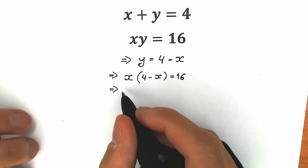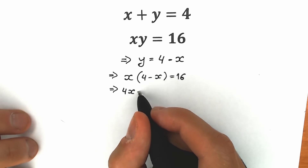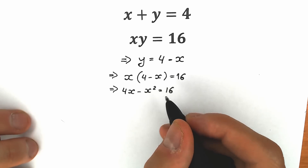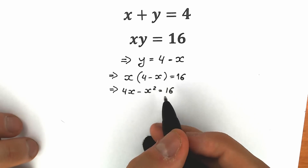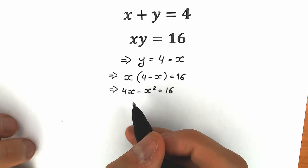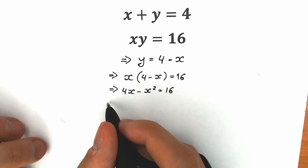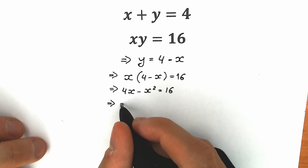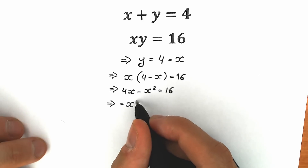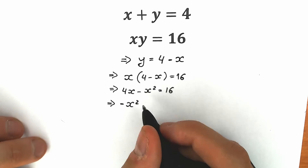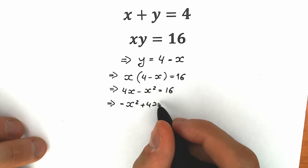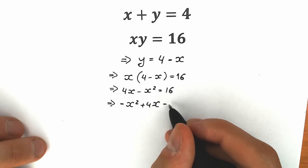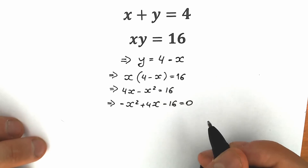As a result we have 4x minus x squared equal to 16. It looks like a quadratic equation — we have a constant, we have x, we have the second power. So right now let's reorder: minus x squared plus 4x, and then bring 16 to the left side, giving minus 16 equal to 0.